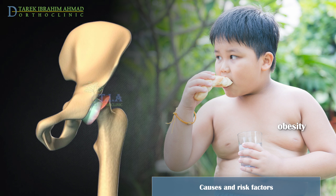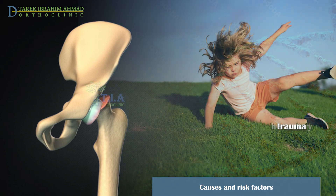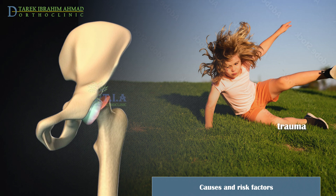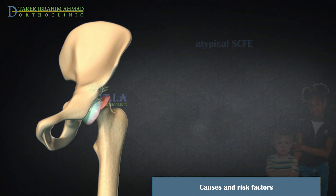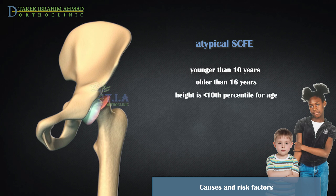Obesity is a major risk factor. There may be a genetic predisposition to this condition. It can also occur due to a fall or other injury, particularly in acute and acute on chronic slips. Children with SCFE who are younger than 10 years or older than 16 years are likely to have one of these risk factors.